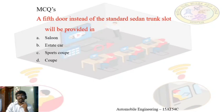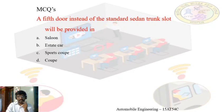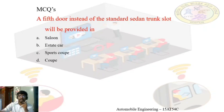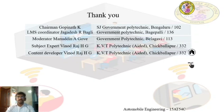The last MCQ asks: in which type of car is a fifth door provided instead of a standard sedan trunk? The options are saloon, estate car, sports coupe, and coupe. The correct answer is estate car, because an estate car is meant to carry more passengers and goods, so a fifth door is provided at the rear for loading and unloading goods. That's all from this particular video — keep on learning.